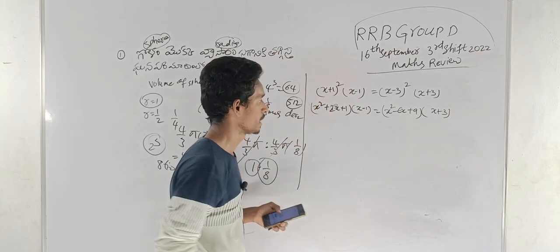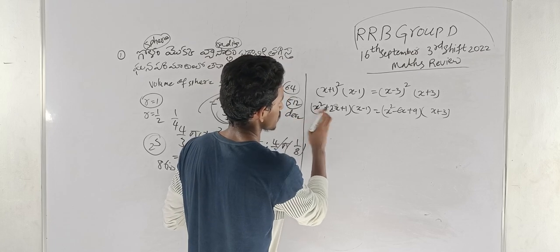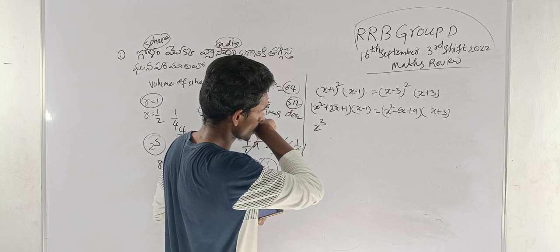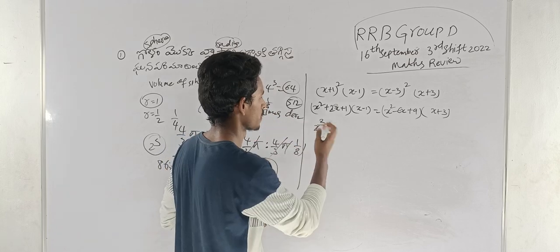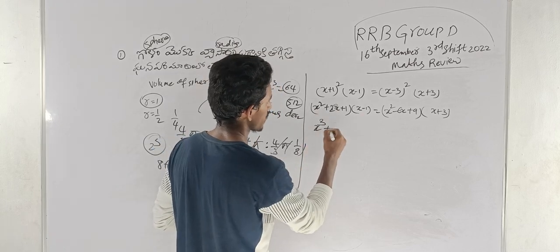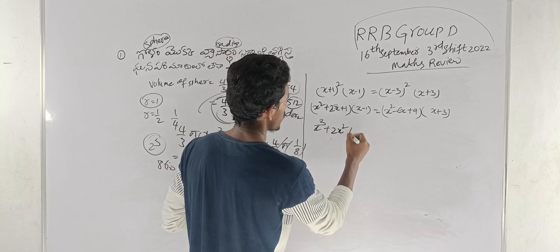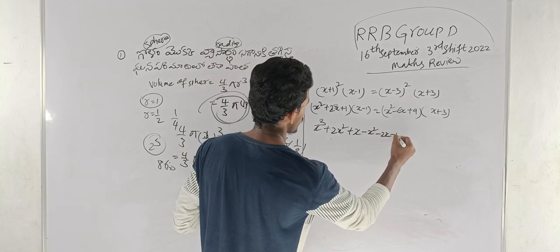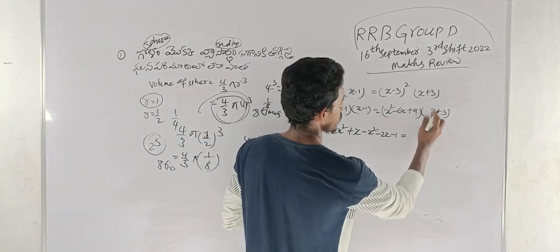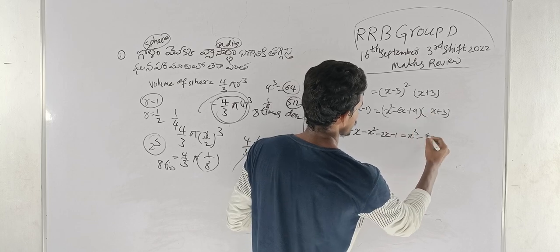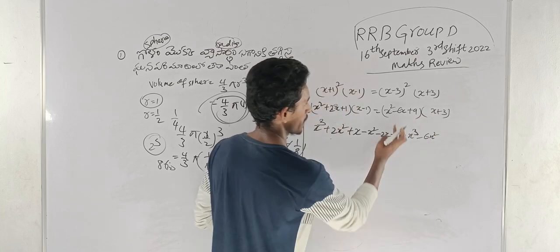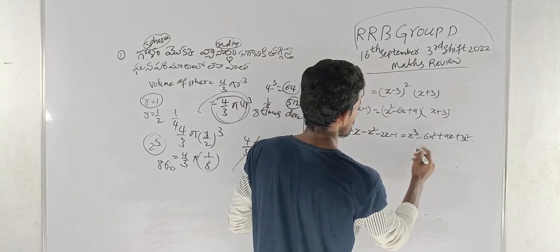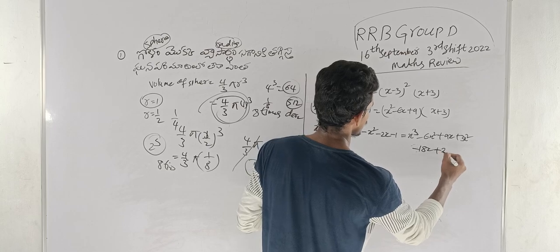Expanding: x² into x gives x³, plus x², then 2x into x gives 2x², plus x, giving x² minus x. Then x² minus 6x into x gives minus 6x², next plus 9 into x gives 9x. Plus 3: x² + 3x² minus 18x + 27.